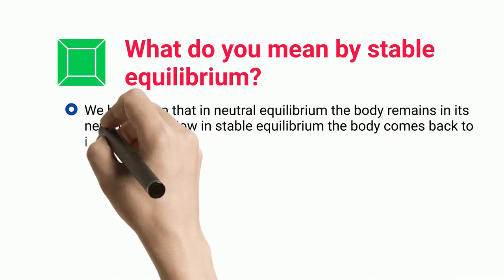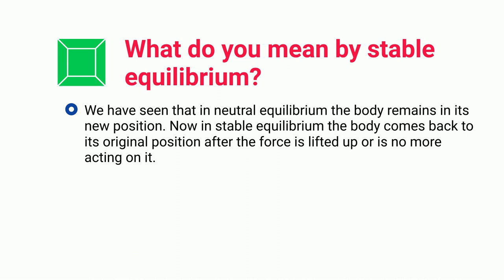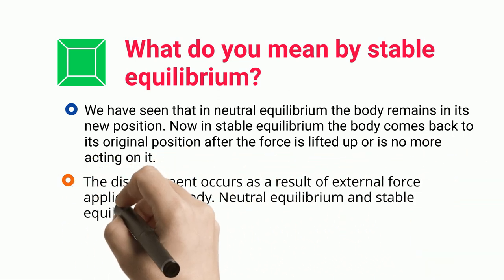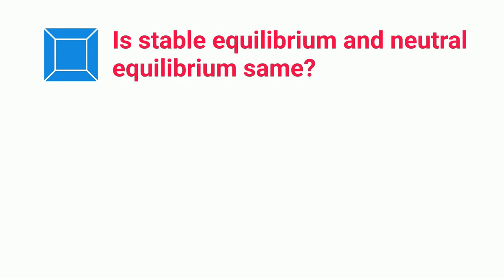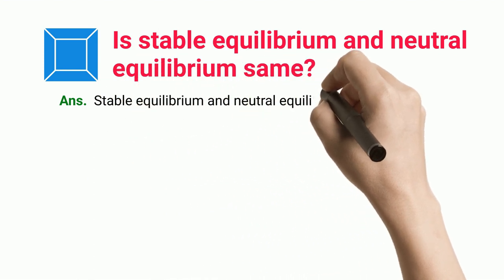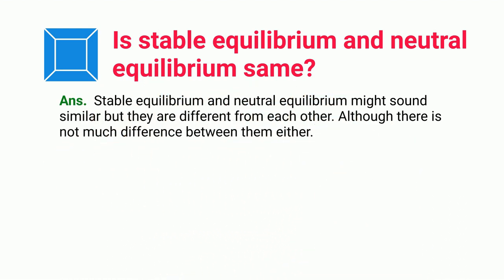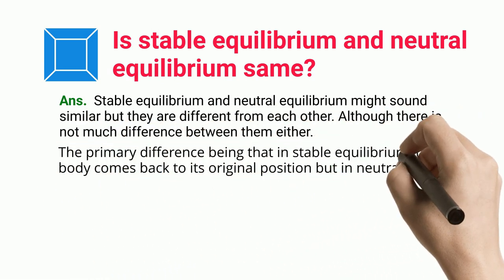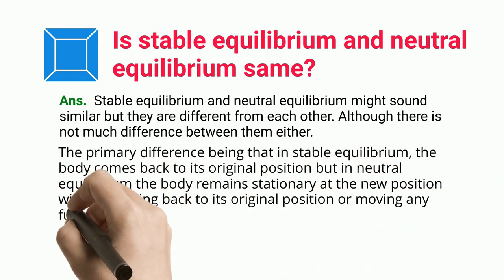In neutral equilibrium the body remains in its new position, whereas in stable equilibrium the body comes back to its original position after the force is lifted. Stable equilibrium and neutral equilibrium may sound similar but are different. The primary difference is that in stable equilibrium the body returns to its original position, while in neutral equilibrium the body remains stationary at the new position without moving back or moving further.